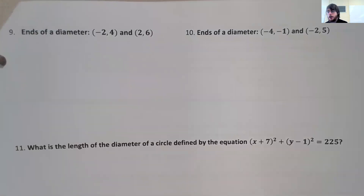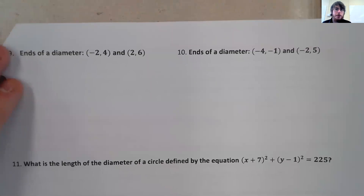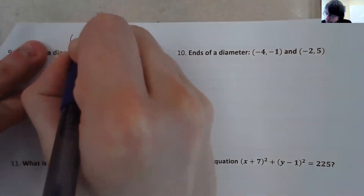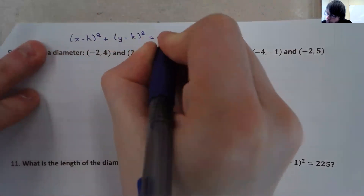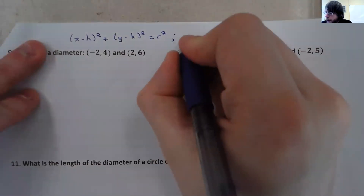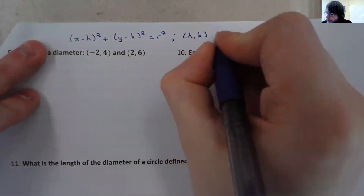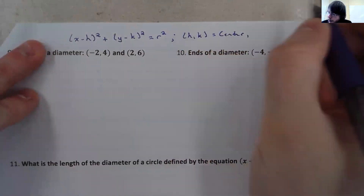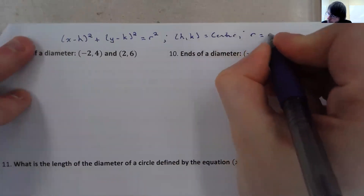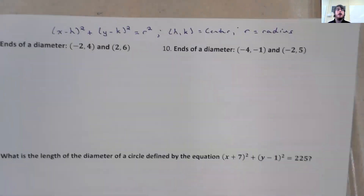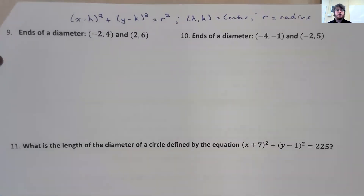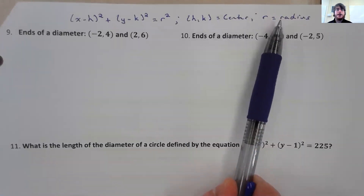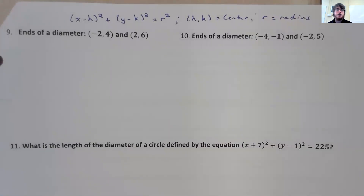Yesterday, we talked about the equation of a circle and how it had to be in this form: x minus h squared plus y minus k squared equals r squared, where h, k is the center and r is the radius. So in order to determine the equation of a circle, you need two pieces of information: your center and your radius. And if you don't have those, then you need to find those first.